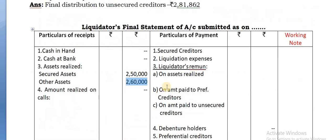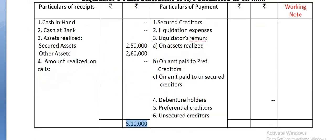You can use an inner column and outer column - better to take a render column in that case. The total you are getting is 5,10,000, which is the total cash available.